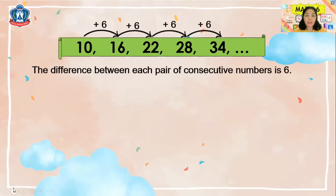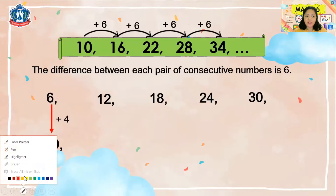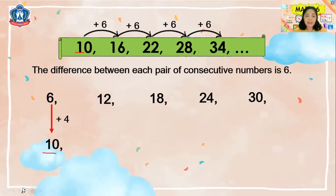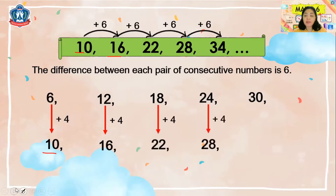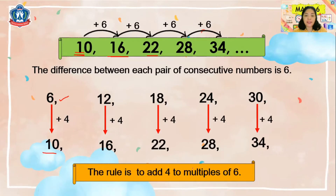Let's compare our number sequence with the multiples of 6: 6, 12, 18, 24, and 30. If we add 4 to 6 we get 10, which matches our first term. Then 12 plus 4 is 16, 18 plus 4 is 22, 24 plus 4 is 28, and 30 plus 4 is 34. So the rule for this number sequence is to add 4 to the multiples of 6. What would be the next term after 34? Share your answers during our Zoom meeting.